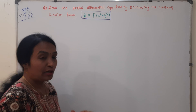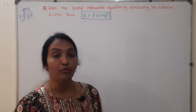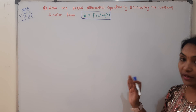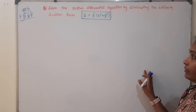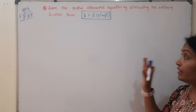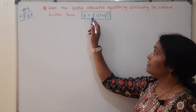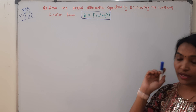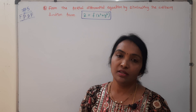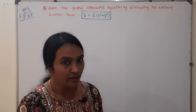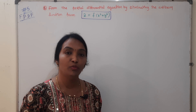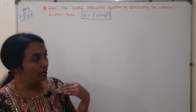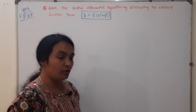Now we will do one more problem. This is the second one — forming the partial differential equation by eliminating the arbitrary function. The given function is z equals f of (x² + y²). We will do partial differentiation, substitution, division, and equating.